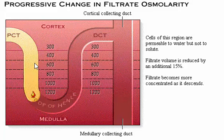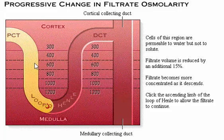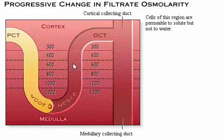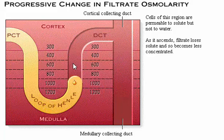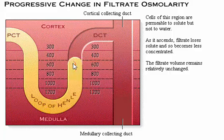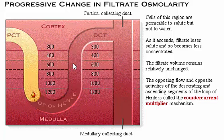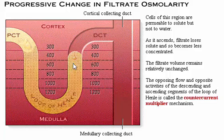The cells of the thick segment of the ascending loop of Henle are permeable to solute but not to water, making them function essentially opposite to the cells of the thin segment of the descending loop. As the concentrated filtrate flows up the ascending loop, the cells actively transport solutes into the interstitium, causing the osmolarity of the filtrate to fall to less than 300 milliosmoles. Because water remains in the tubule, the filtrate volume remains unchanged. The opposing flow and opposite activities of the descending and ascending segments of the loop of Henle is called the countercurrent multiplier mechanism.